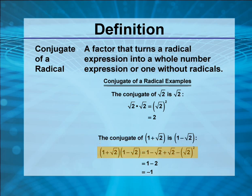When you multiply 1 plus the square root of 2 by 1 minus the square root of 2, you get four terms using the FOIL method. You get 1 minus the square root of 2 plus the square root of 2 minus the square root of 2 squared.